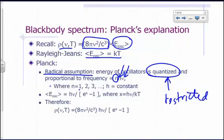So n here is 1, 2, 3, 4. So it can be hν, 2hν, 3hν, and so on. That's what quantized means.